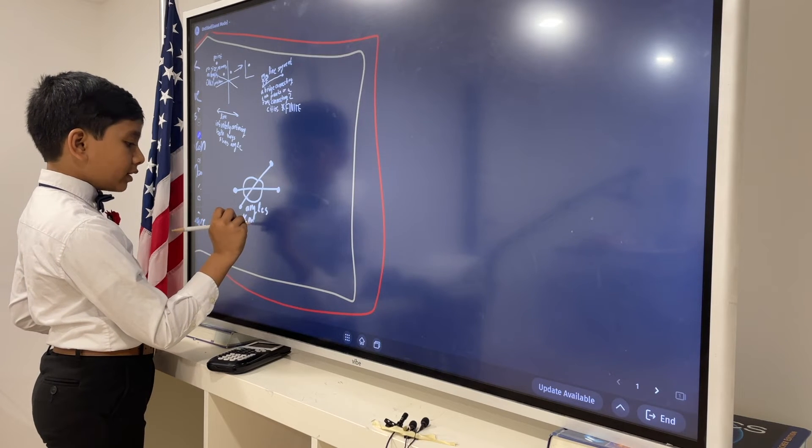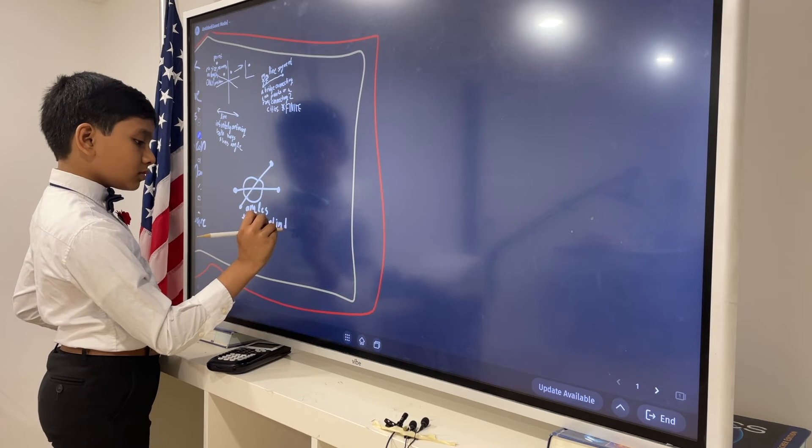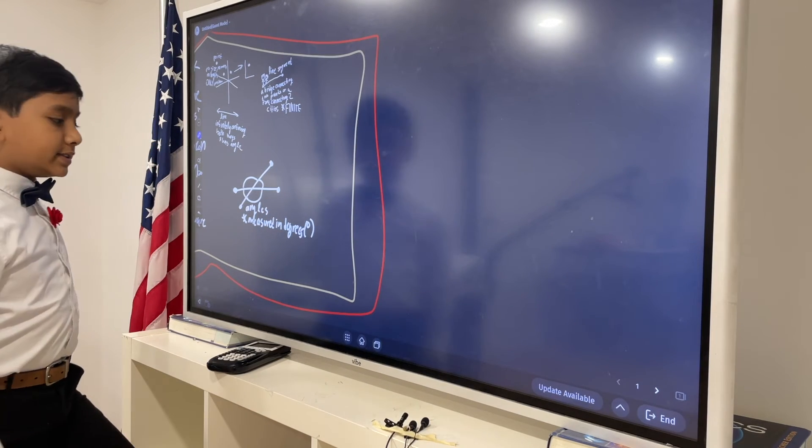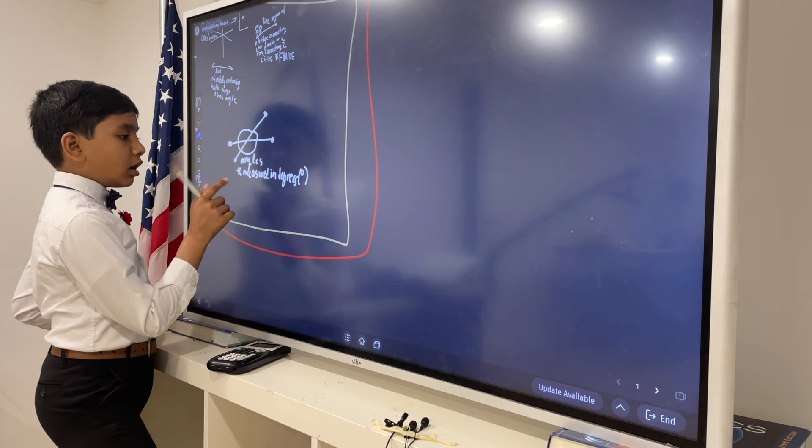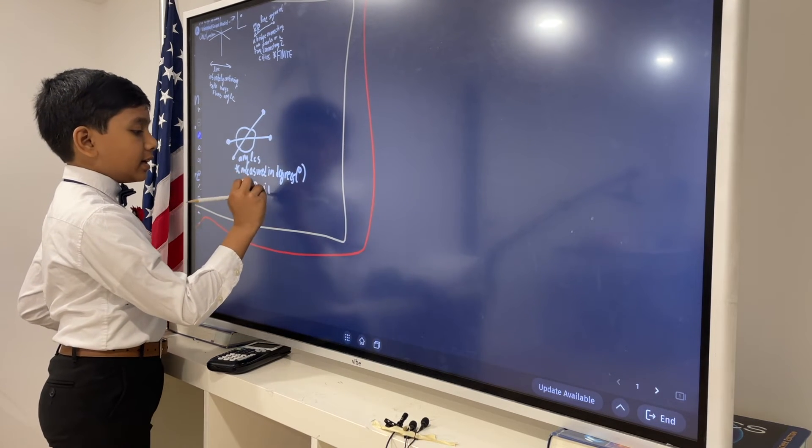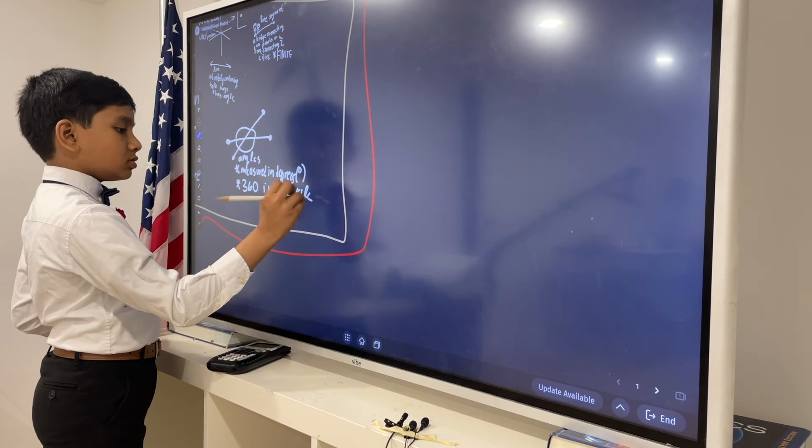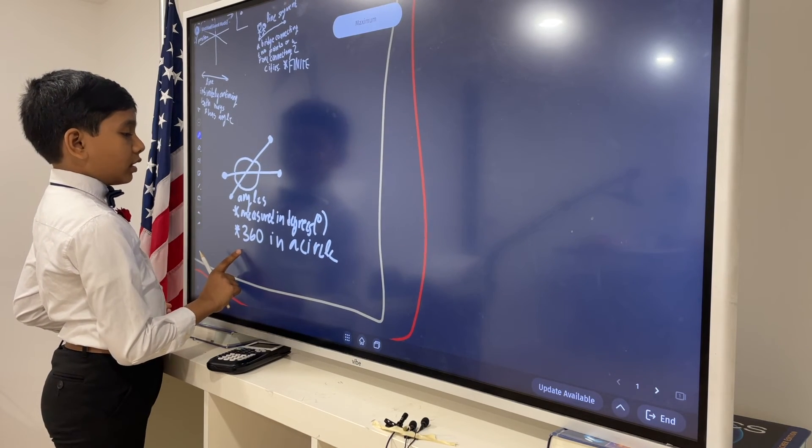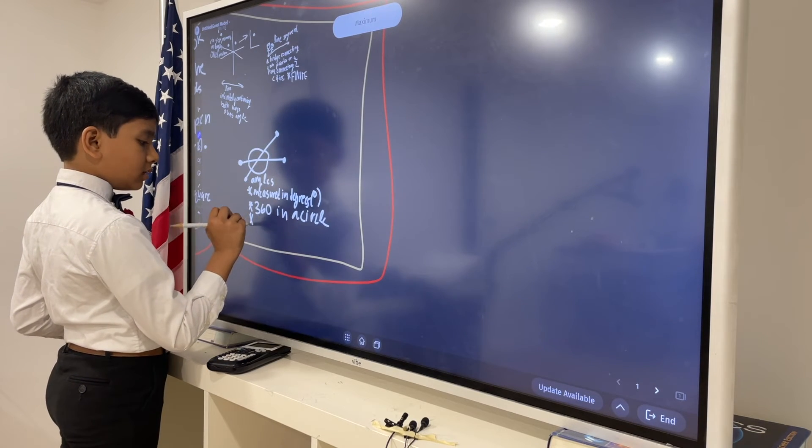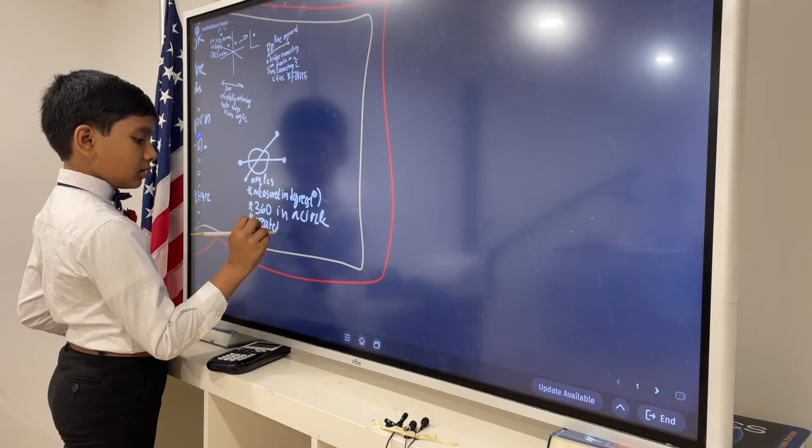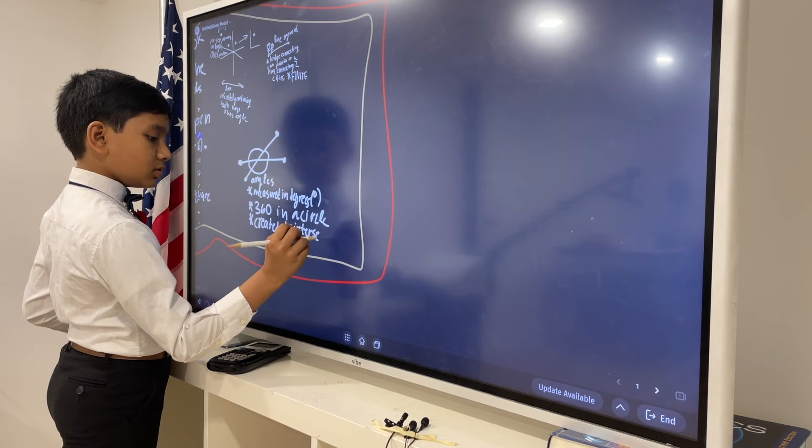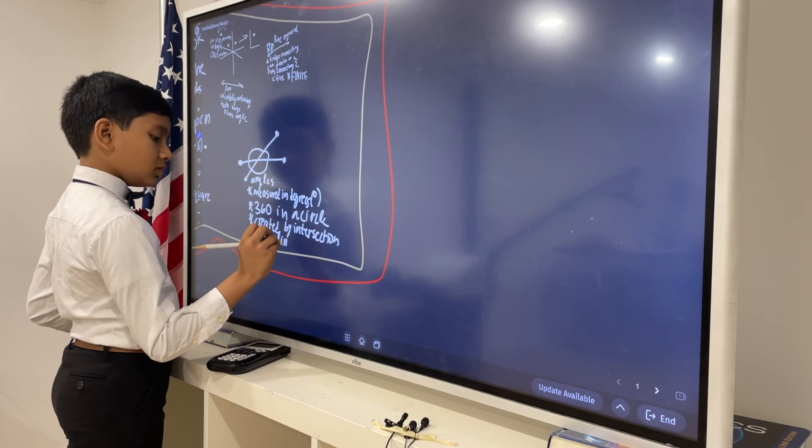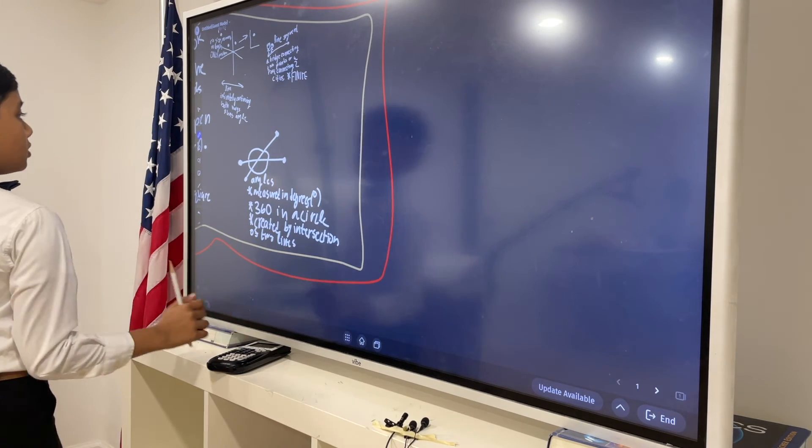So, they are measured in degrees. Which is this little mark. You've probably seen them for Fahrenheit and Celsius degrees. It's also. There's also 360 in a circle. And, I mean, that's really all I have to say about it. And, it can be created by the intersection of two lines. Done.